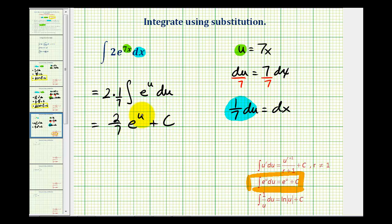And now we just need to replace u with 7x. So we have 2/7ths e to the 7x plus c as our anti-derivative in terms of x.